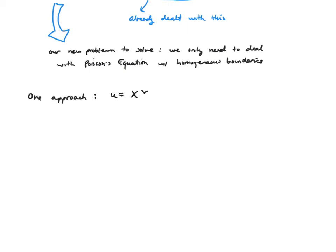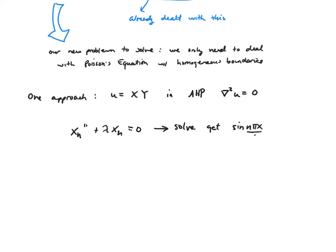One approach — built off of our previous methods — is to go U equals separation of variables, capital X times capital Y, in the associated homogeneous problem grad squared U equals zero. I'd then get X_N double prime plus lambda X_N equals zero, solve it, and get my eigenfunctions: sine(N pi x / A). My eigenvalues are lambda_N = (N pi / A)^2. I'd have my second ODE: Y_N double prime minus lambda Y_N, just like back when we did Laplace's equation.